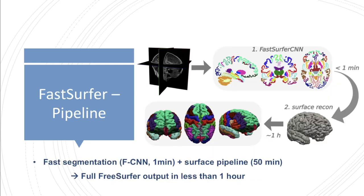In order to do this, we use an advanced deep learning architecture called FastSurfer CNN to create a whole brain segmentation into 95 classes in less than a minute, which basically mimics FreeSurfer's anatomical segmentation and cortical parcellation.